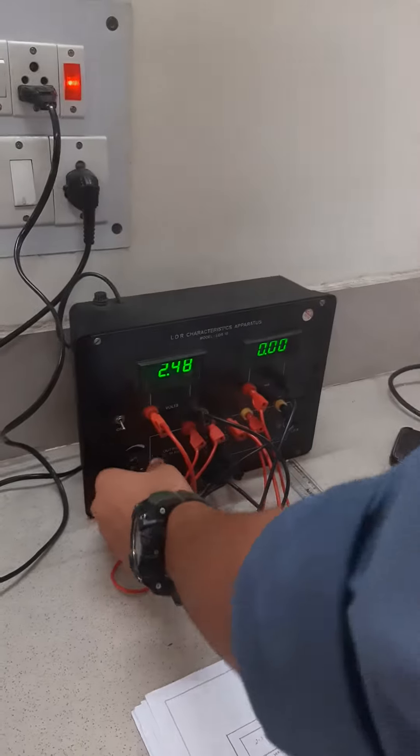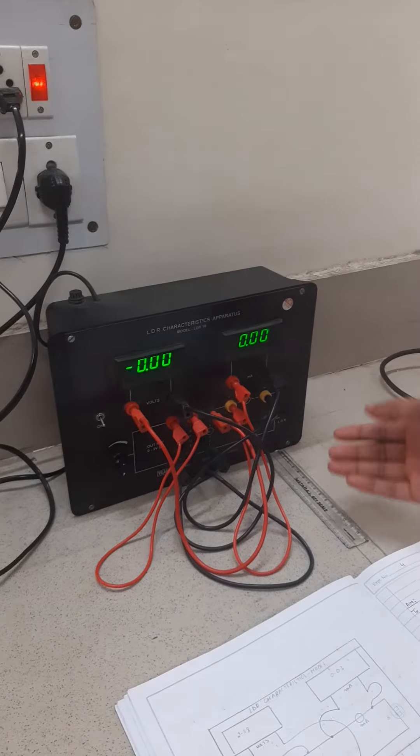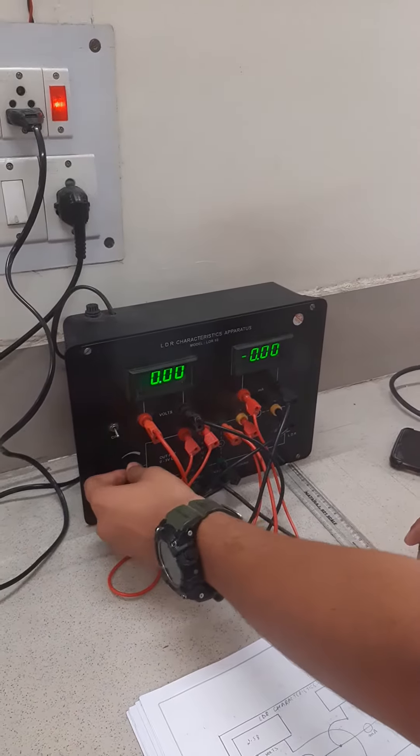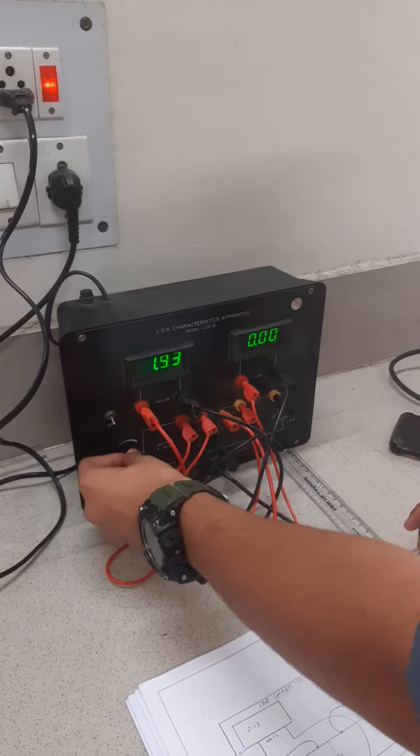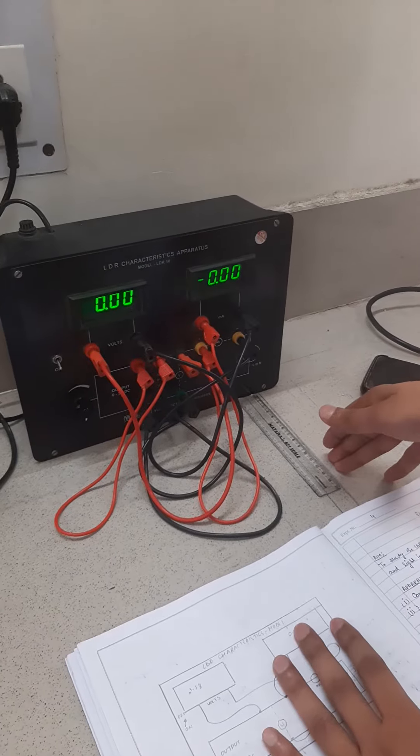We will see the setup here. There is a voltmeter, an ammeter, an LDR, and a voltage source for changing the voltage which ranges from 0 to 3 volts. There is a scale here. We will place the flash and observe the readings.